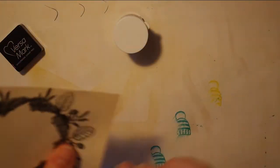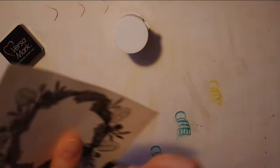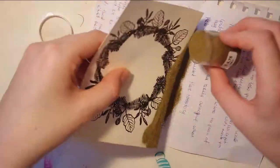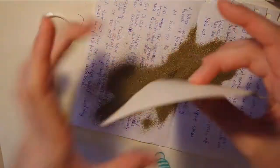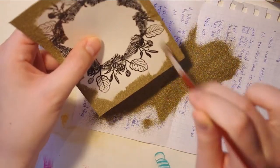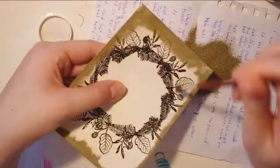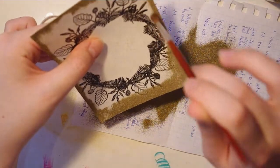I am also using gold embossing powder and I'm inking the edges of the card with Versamark ink. I'm taking a brush to remove a bit of that gold embossing powder because I think it was a bit too much.